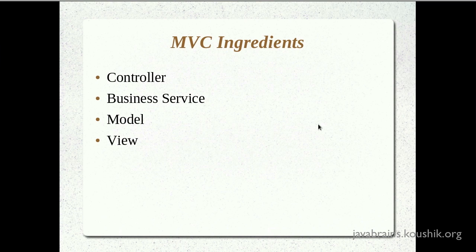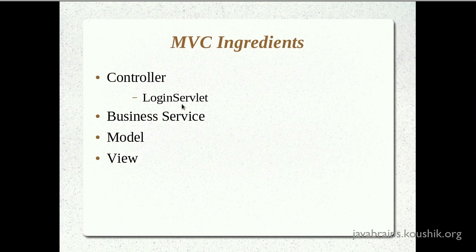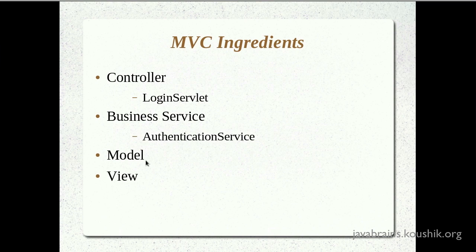We will implement a login servlet that captures the user ID and password. It does not do the authentication itself — it passes this on to a business service. Remember, a waiter does not know how to cook. So the business service will be an authentication service — a simple Java bean with a method for authenticating the user. After the business service returns a response, that response has to be stored in some value. It could be a primitive like a Boolean, or a separate Java class — a model containing the authentication result.